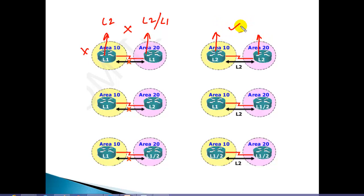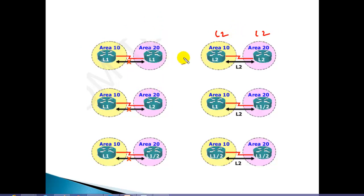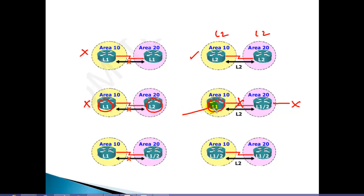If both routers are in different areas, this works when both are Level 2 or Level 1/Level 2, because to exchange routes between different areas the router must be Level 2 or Level 1/Level 2. Level 1 will not exchange routes with different areas — it only exchanges routes with routers within the same area.